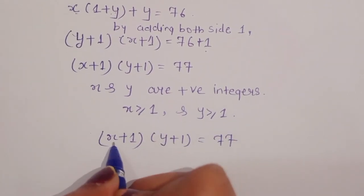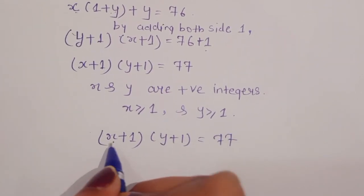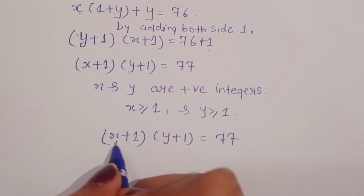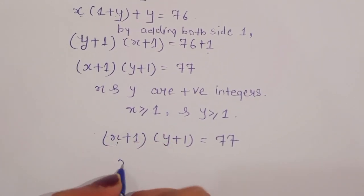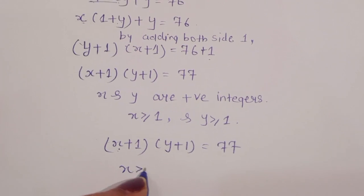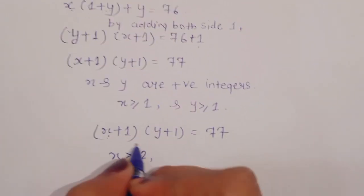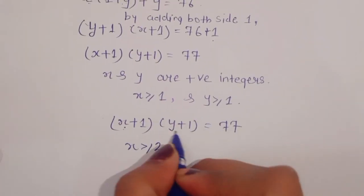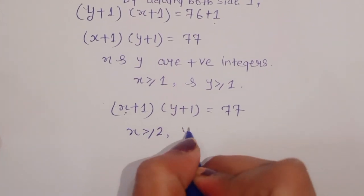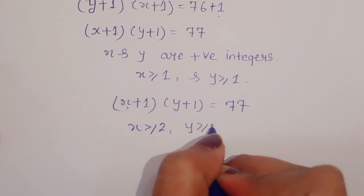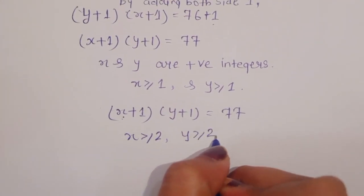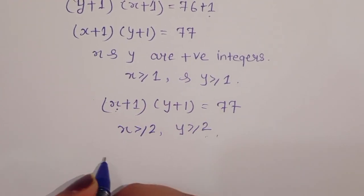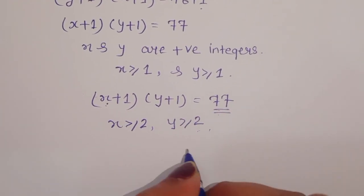Since x is at least 1, we have x plus 1 is greater than or equal to 2. Similarly, y is at least 1 so y plus 1 is greater than or equal to 2. Now let's take the factors of 77.